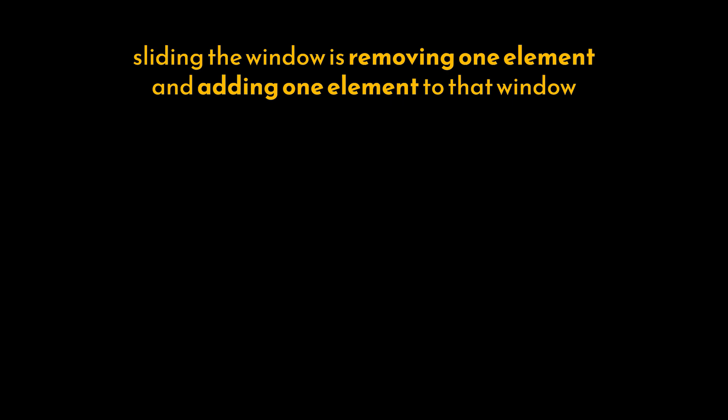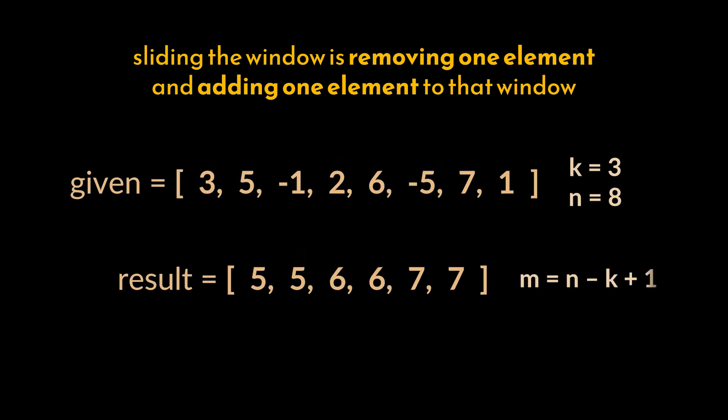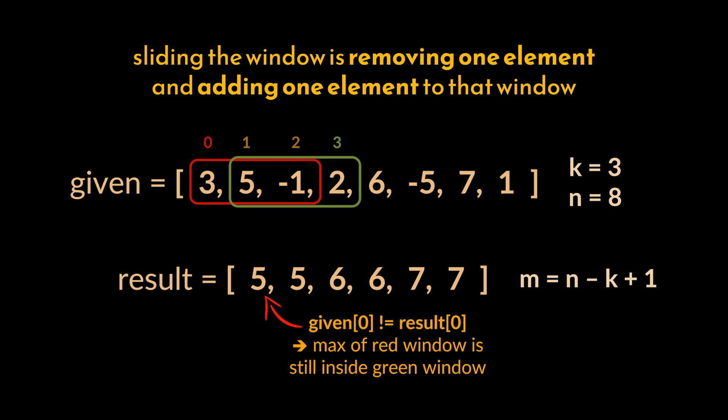To do that, we must realize that sliding the window is effectively removing and adding one element to that window. Let's bring back our initial example. When the window slides from index 0 to index 1, we are removing the element at index 0 and adding the element at index 0 plus K, in this example index 3. We can deduce that if the element at index 0 was not the maximum of the previous window, then that maximum must still be within the current window even after it slides.